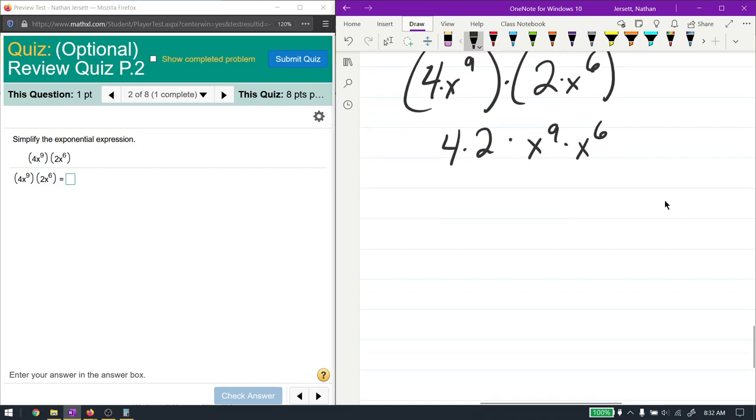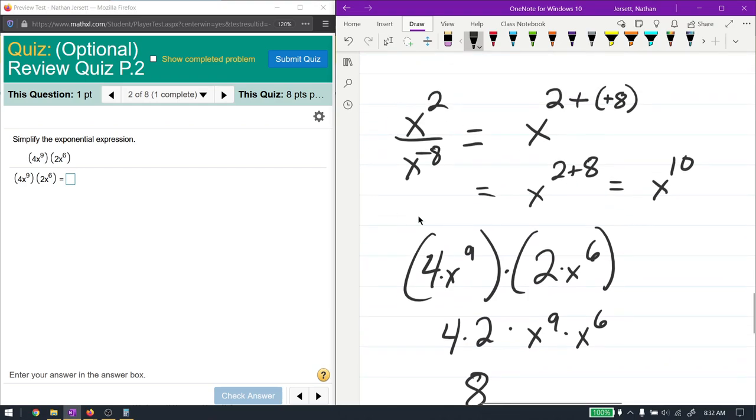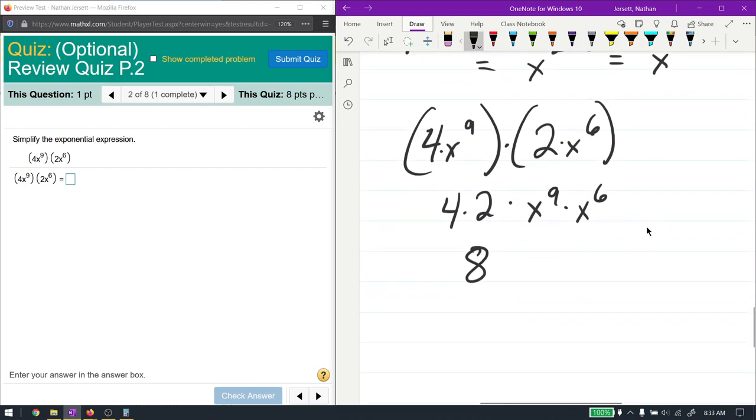4 times 2 is 8. And x to the 9 times x to the 6, these are like bases that are multiplying. The previous problem, we had like bases that are dividing, and we subtracted.